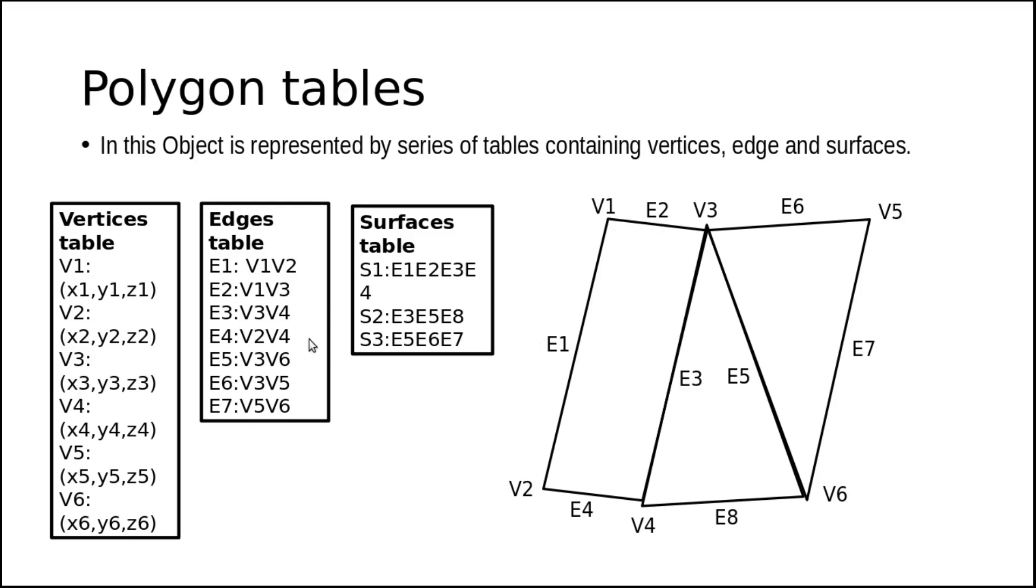The next table contains edges. E1 is V1 and V2. Last is the surface table. Suppose this is the surface: E1, E2, E3, E4 make surface one. So that surface is entered into the surface table.